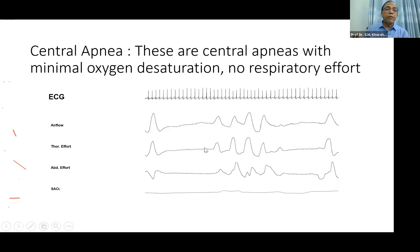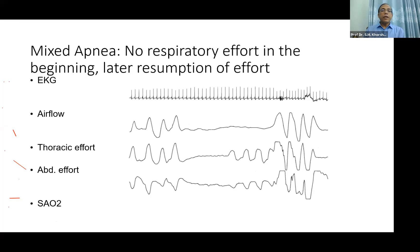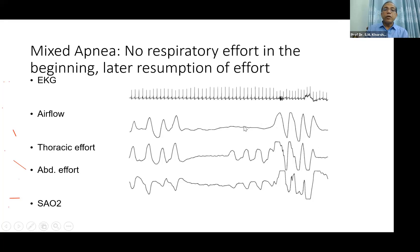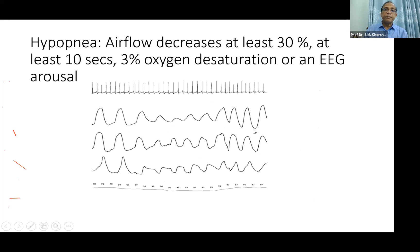In the graph for central apnea, there is no effort, no airflow, no thoracic or abdominal effort or movement. In mixed apnea, to begin with there is no airflow, no thoracic effort, and no abdominal effort — that part is central apnea — but then thoracic effort resumes while airflow is still absent — that part is obstructive apnea. In obstructive apnea, there is thoracic effort and abdominal effort but no airflow.